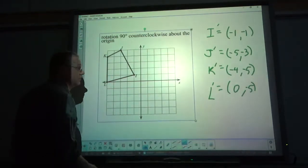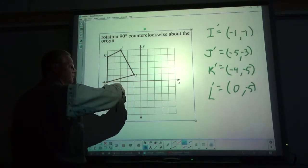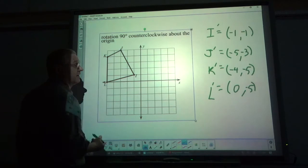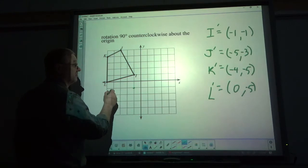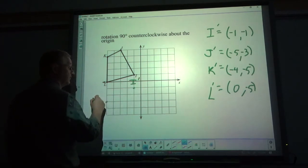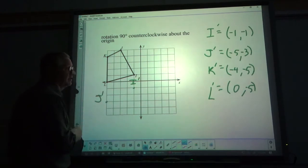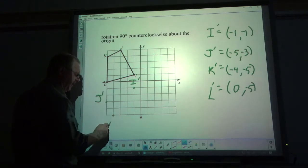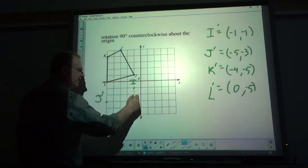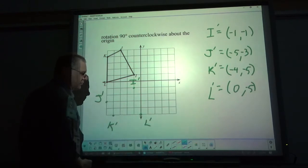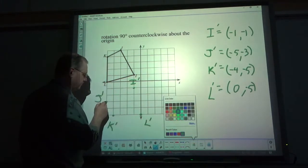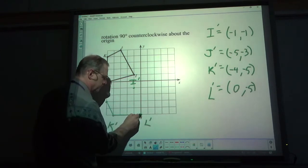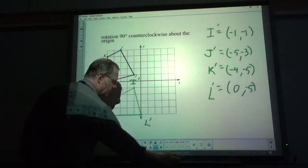And plot those points. We know it's going to go from quadrant 2 to quadrant 3, because it's going this way. Negative 1, negative 1. Negative 5, negative 3. That was I, J. K, negative 4, negative 5. L is 0, negative 5. L prime. Connect them up. There you have it.